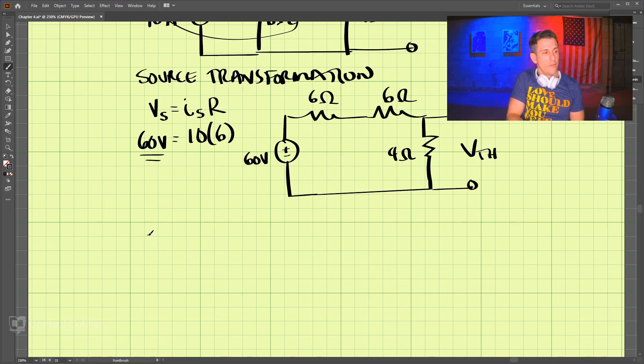So our Thevenin voltage is equal to the 4 ohm resistor divided by the total of this. So that is 6 plus 6 plus 4 times our 60 volt voltage source. So this is 4 divided by 12.